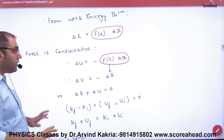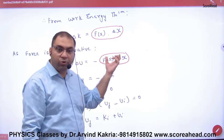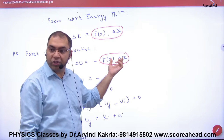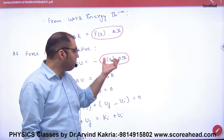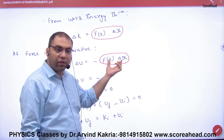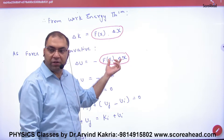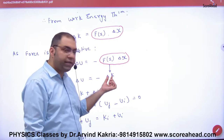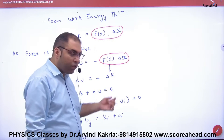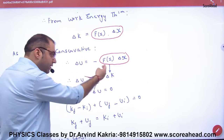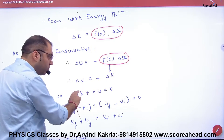Work-energy theorem क्या कहती है कि net amount of work done वो क्या होता है change in kinetic energy। According to work-energy theorem, net amount of work done is equal to change in kinetic energy। यानी delta U = -delta K।